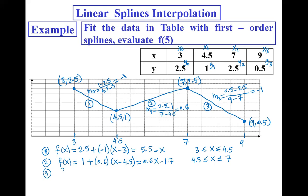The third linear spline equation: f(x) equals y2 (2.5) plus m2 (-1) times (x minus x2 = 7), which simply equals 9 minus x, when x belongs to the interval [7, 9], i.e., greater than or equal to 7 and less than or equal to 9.